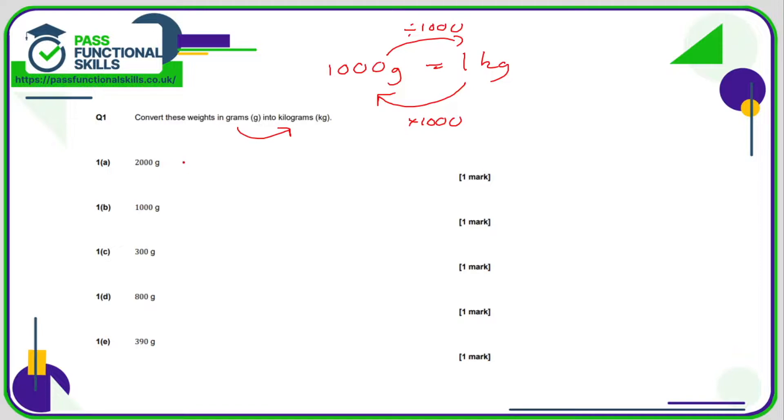2000 divided by 1000 is 2. 1000 divided by 1000 is 1. So when you've got three zeros and you're dividing by 1000 just chop off those three zeros.